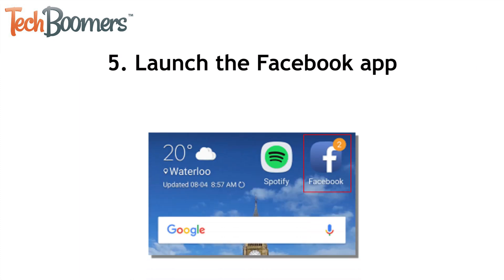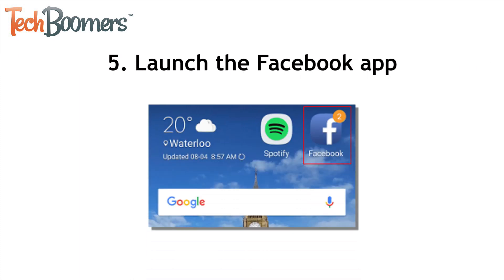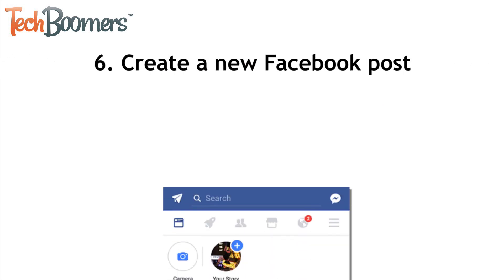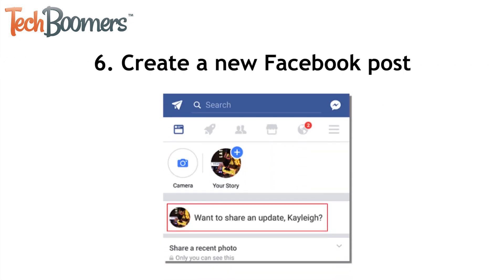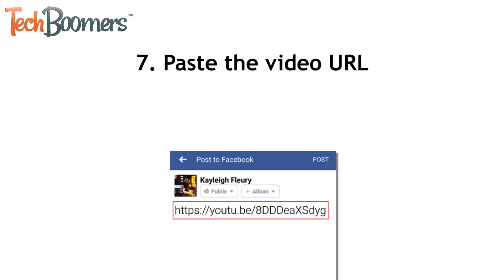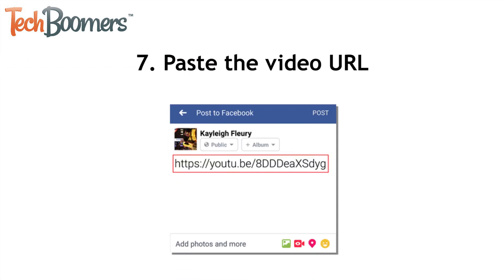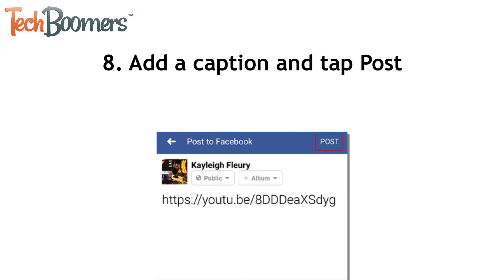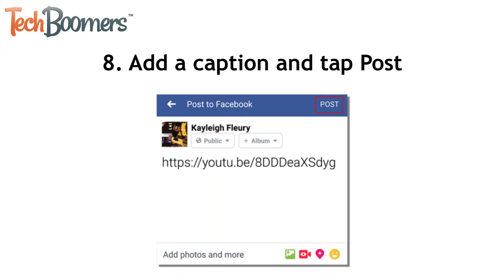Now go back to your Android home screen and launch your Facebook app. Start creating a new Facebook post. In the text box, paste the URL of the video you copied from YouTube. Add a caption, then tap post to share it to your Facebook page.